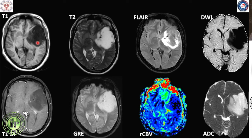The T1 axial, T2 axial, FLAIR, diffusion, ADC, T1 post-contrast, gradient, and RCBV map are shown. On T2 axial, we have a homogeneously T2 hyper-intense lesion which is near completely suppressed on FLAIR with some persistent peripheral rim of FLAIR hyper-intensity.